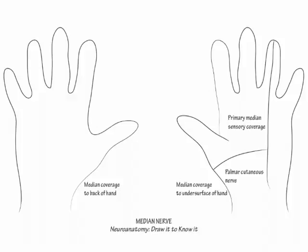On the palm down tracing, show that the median sensory coverage extends to the dorsal tips of the thumb, index and middle fingers, and lateral half of the ring finger. This completes our drawing of the median nerve.